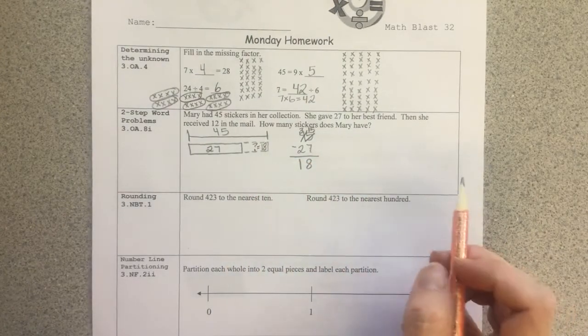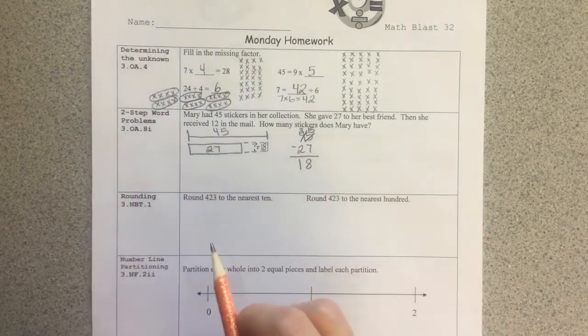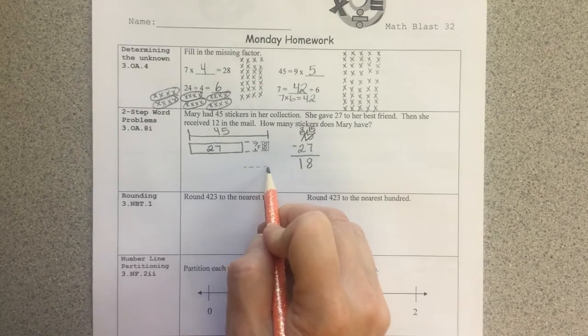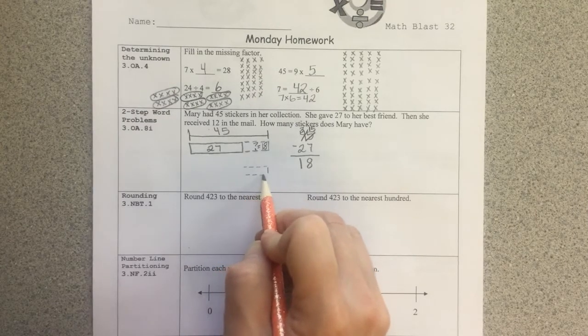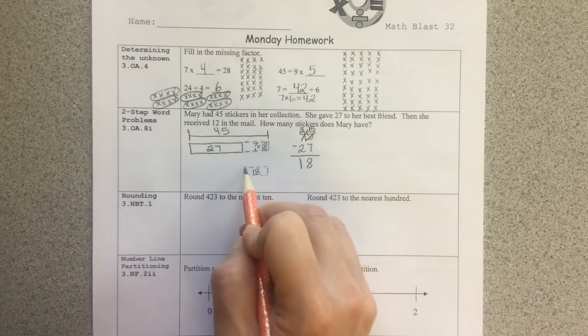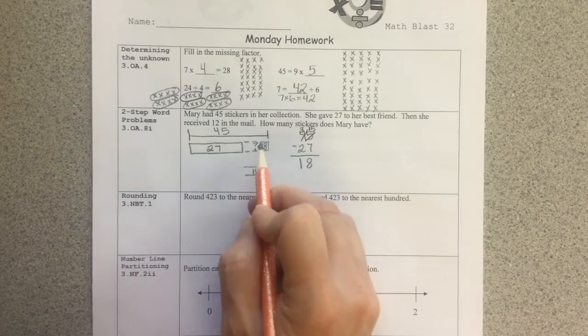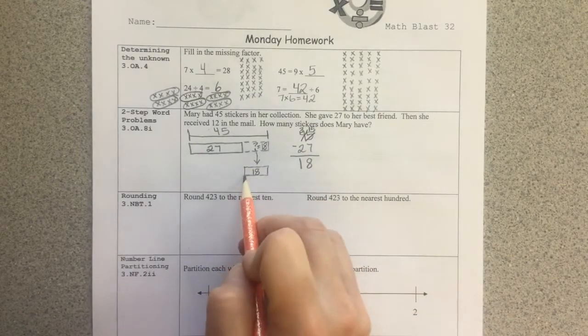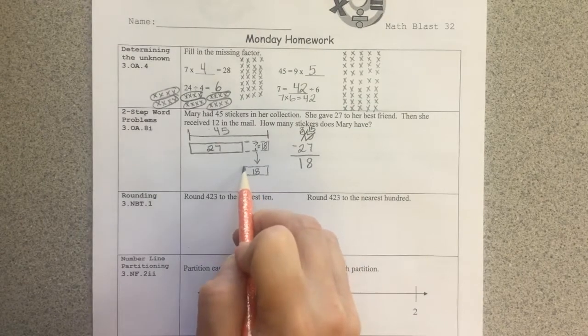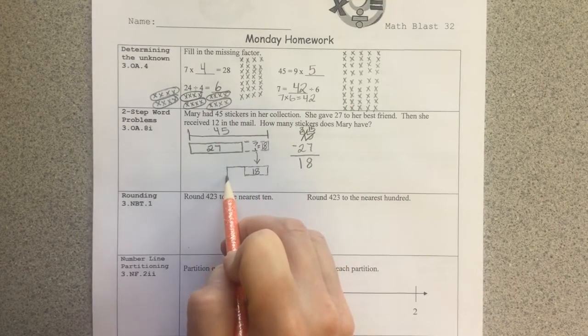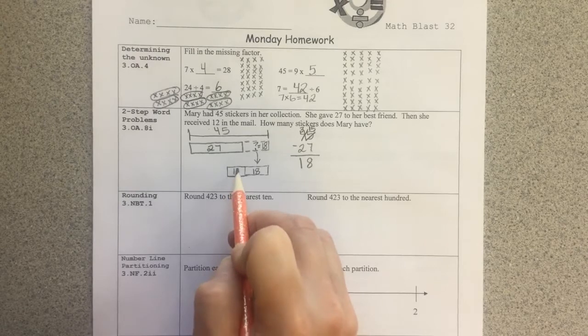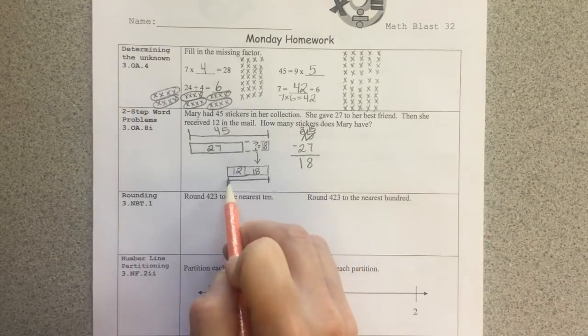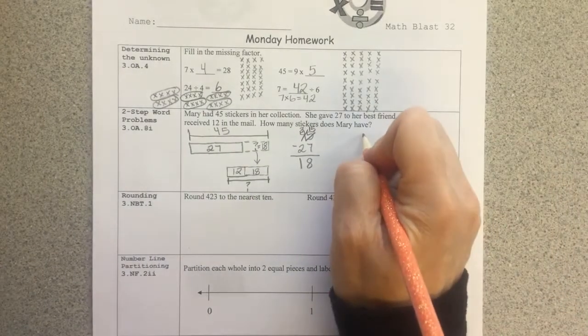Now we're not finished answering the question because it said, then she received 12 in the mail. So we want to take this 18 here that she had left. That's this piece here. Just bringing that down. And with that 18, we know she got 12 in the mail. And so now the question is, what's this total here?